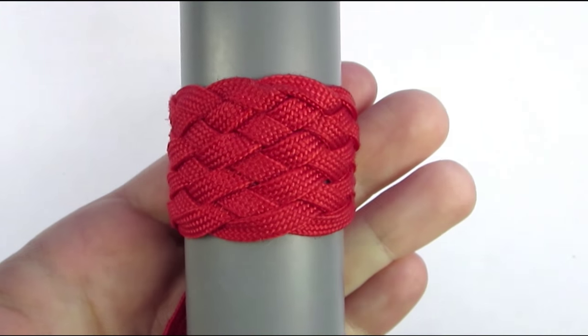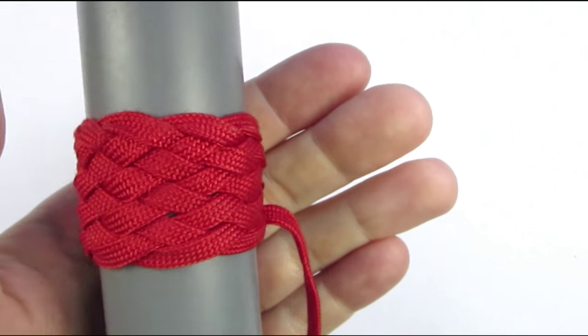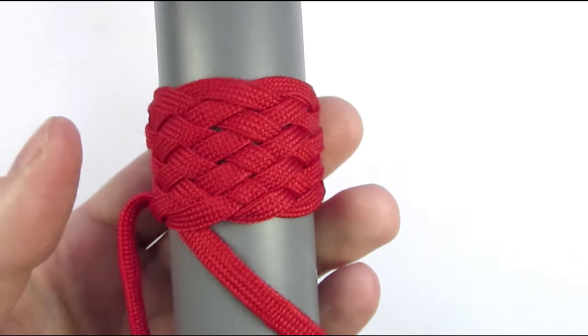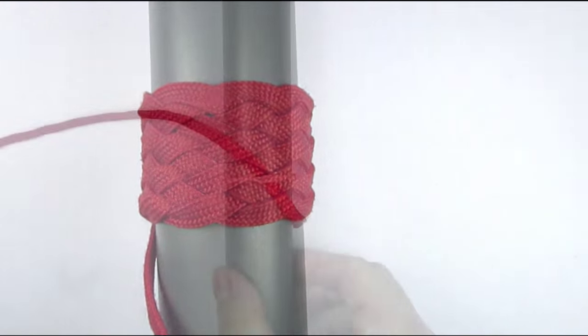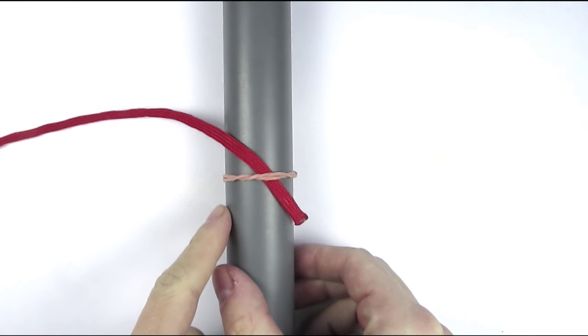So here you can see the end result, which is a 9-part 8-bight Turk's head. To tie it, we're first going to need a mandrel, some cord, and a rubber band.